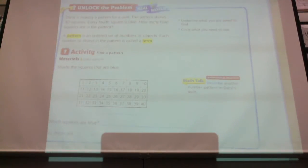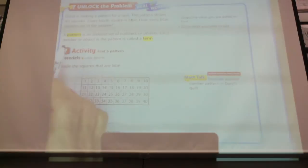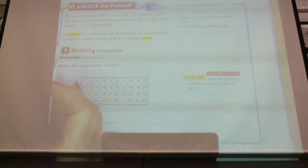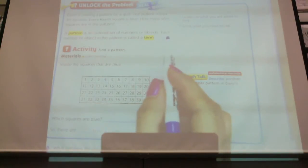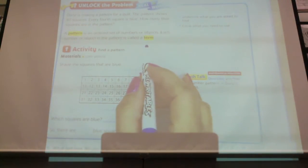So given the model here, this is easy to figure out because we're going to count every fourth square and make it blue. We have the definition of a pattern. We just did an assignment on pattern. I know you guys know what pattern means, but here's the formal definition. A pattern is an ordered set of numbers or objects. Each number or object in the pattern is called a term.